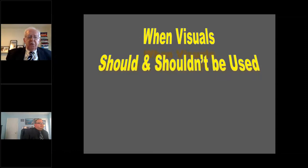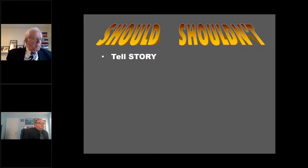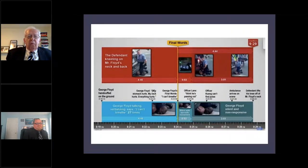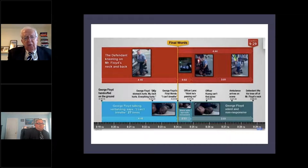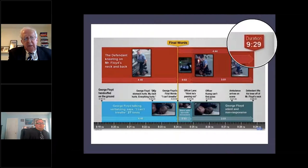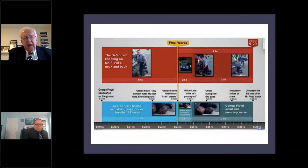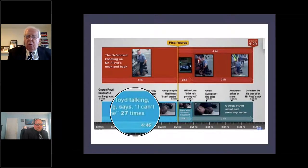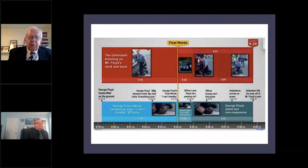When should we use visuals? Obviously when we want to tell a story. One great visual usable in almost every opening statement is a timeline. From the Derek Chauvin murder trial, at the top you have Chauvin kneeling on the neck of George Floyd for nine minutes and 29 seconds. Across the bottom, you have what Floyd was saying and what was happening to him as those nine minutes and 29 seconds passed, giving jurors an understanding of the chronology and amount of time.